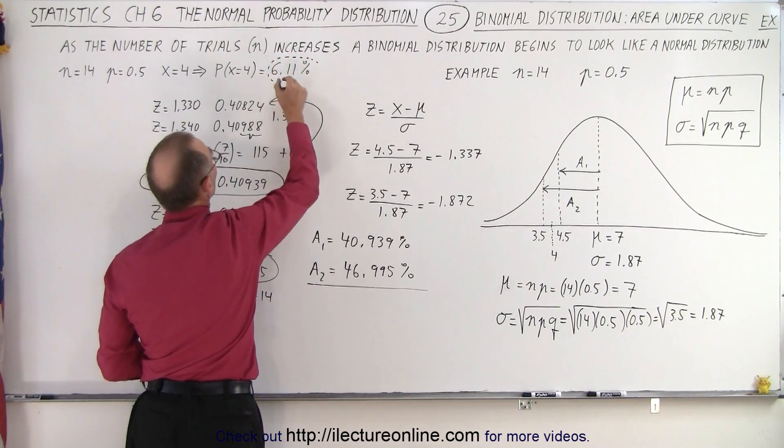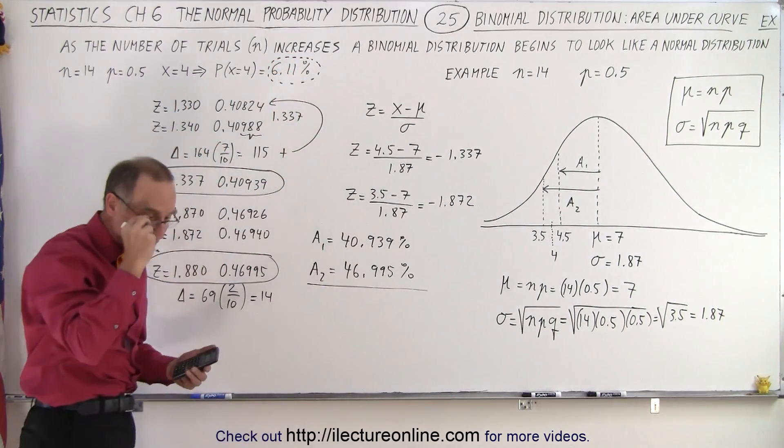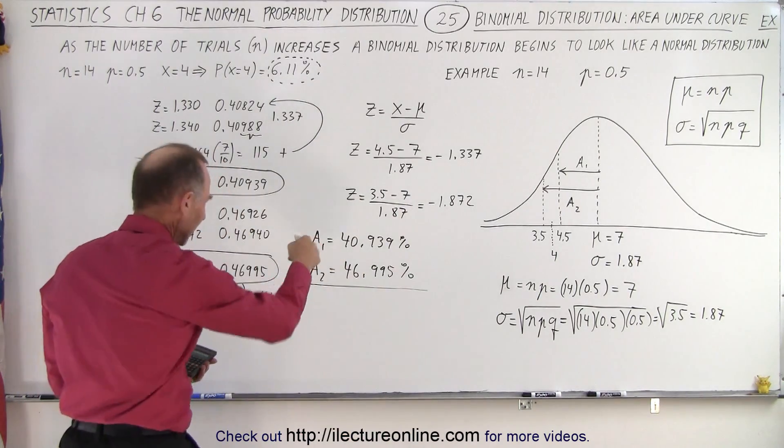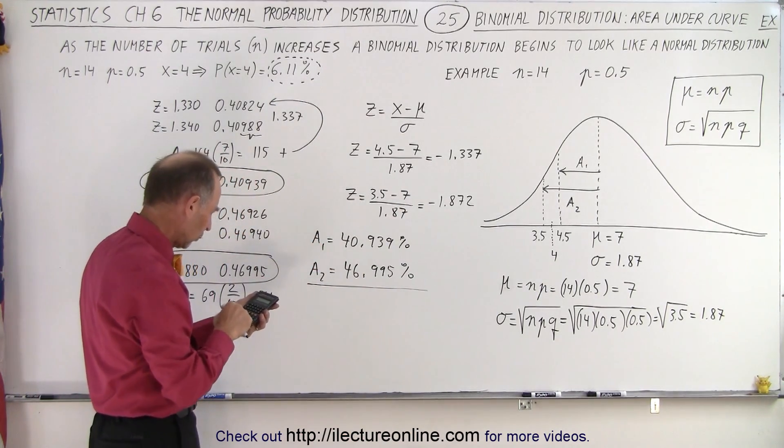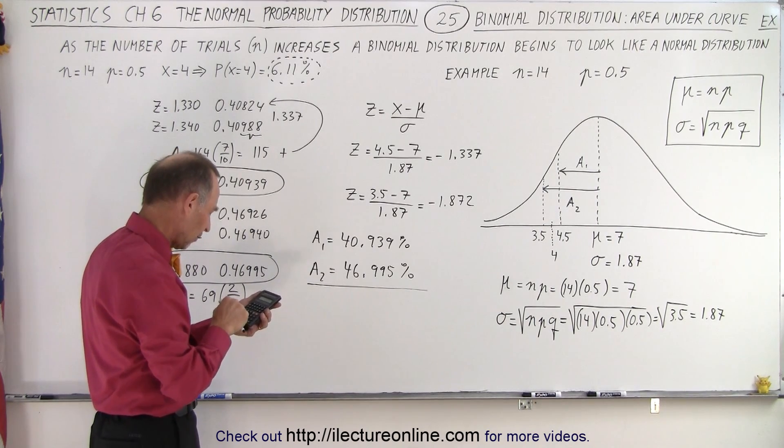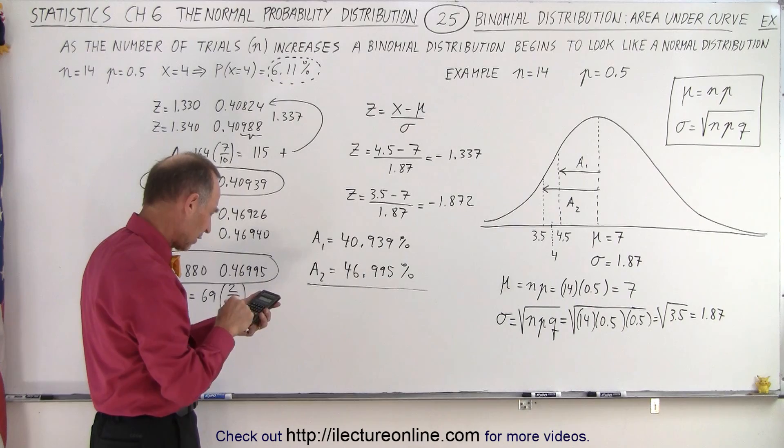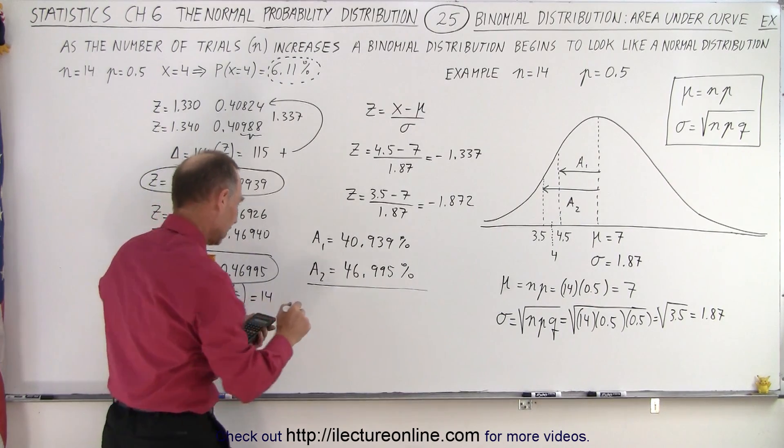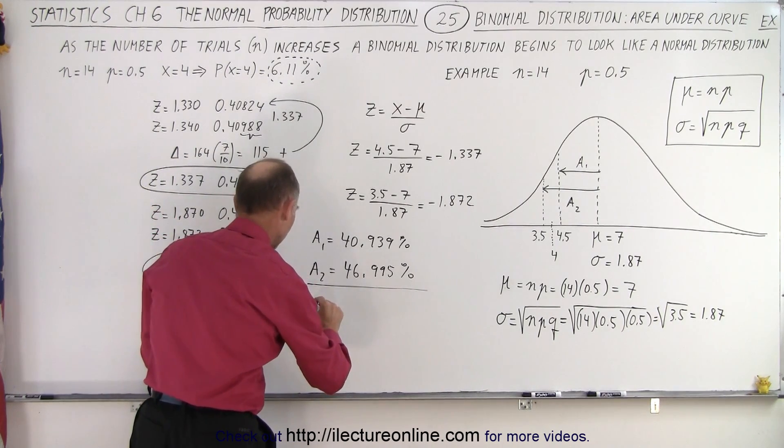So let's try that. Let's take the difference between those two. So 46.995 minus 40.939, and I get the delta, so the area which represents the probability of getting a 4 of the outcome being 4.